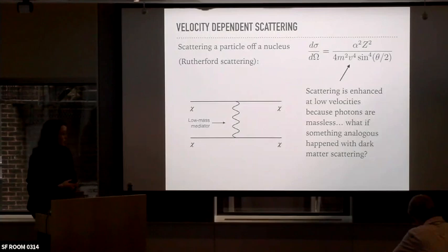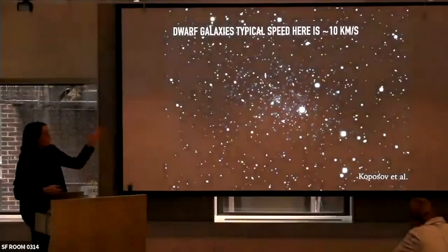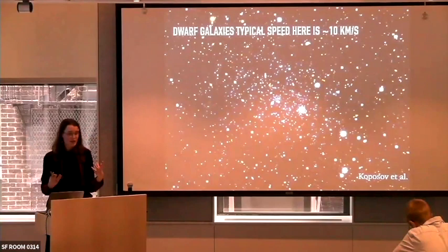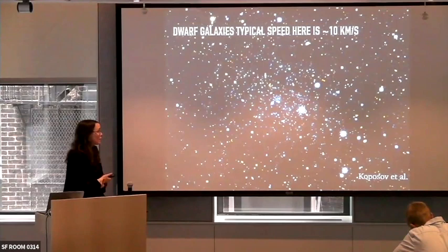Something analogous could be happening with dark matter self-scattering: if there's some mediator that's mediating the scattering and it's very low in mass, it could have some funky low-velocity behavior. V to the minus four is what happens if it's exactly massless, but give it a small mass and you can have resonances and all sorts of non-trivial velocity behavior. Dwarf galaxies would be a great place to test this — they're so dark matter dominated and the velocities are several orders of magnitude smaller than in merging clusters.